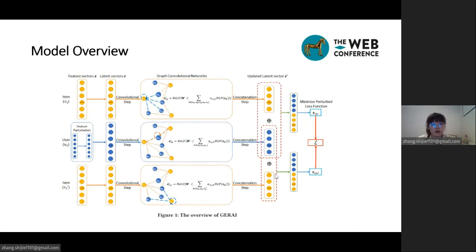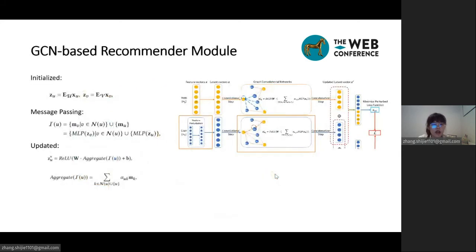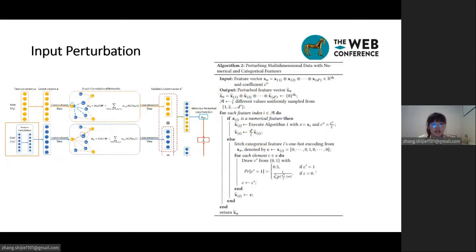This is the overview of our model, named GRI. In GRI, we built the recommendation module based on state-of-the-art GCNs to gently exploit the user-item interactions and the rich side information of users. To achieve optimal privacy strength, we propose a novel dual-stage perturbation strategy with DP. At the input stage, GRI performs perturbation on the raw user features, offering users a privacy guarantee while making the generated recommendations less dependent on users' true attributes.